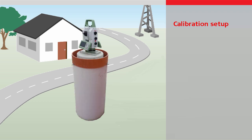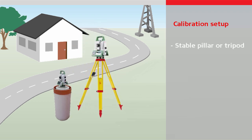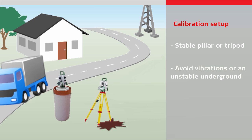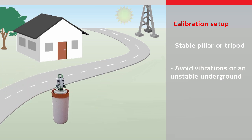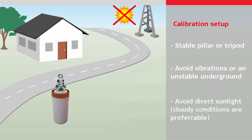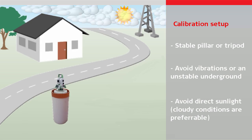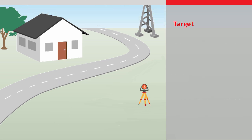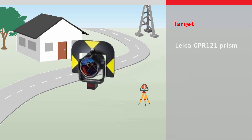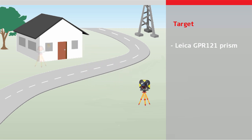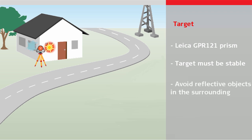Set up the instrument on a stable pillar or tripod, as an unstable or vibrating environment will affect the results. The instrument should be protected from direct sunlight to avoid thermal warming. Environments with strong heat shimmer or air turbulence should be avoided; it is recommended to calibrate the instrument under cloudy conditions. For the target, we recommend using a Leica Circular Prism GPR121 in a location protected from direct sunlight. Vibrations of the target, as well as reflective surfaces or light sources around the prism, should also be avoided.